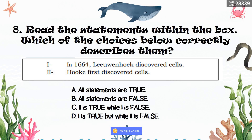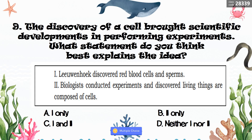Number nine: The discovery of a cell brought scientific developments in performing experiments. What statement best explains the idea? 1. Leeuwenhoek discovered red blood cells and sperms. 2. Biologists conducted experiments and discovered living things are composed of cells. Is it A. One only? B. Two only? C. One and two? D. Neither one nor two? The correct answer is letter C — one and two.